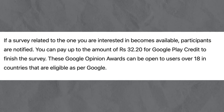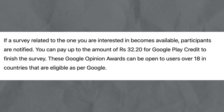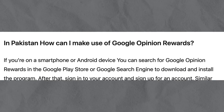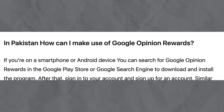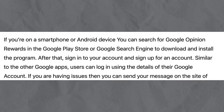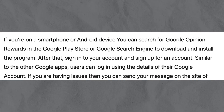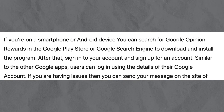If a survey related to one you are interested in becomes available, participants are notified. If you are on a smartphone or Android device, you can search for Google Opinion Rewards in the Google Play Store or Google search engine to download and install the program.